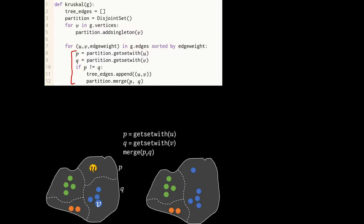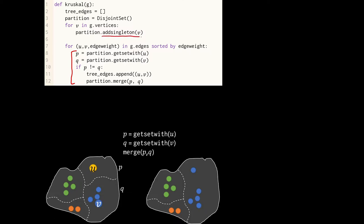We say, give me the set containing U, give me the set containing V, and then we'll merge those two sets. Just for completeness, we ought to mention the other operation. To build up the initial state of the data structure, what we do is we create one set for every vertex. We have an addSingleton method, which takes an item and creates a set consisting purely of that item.